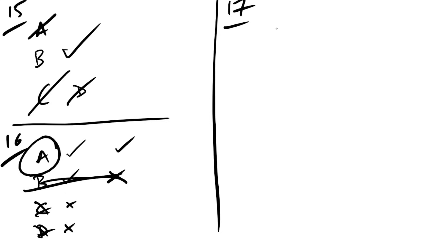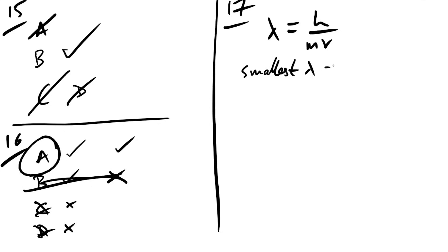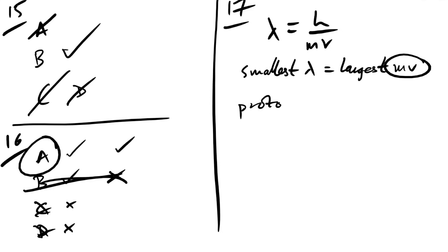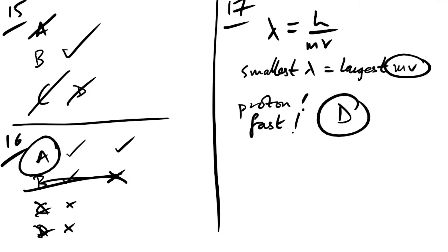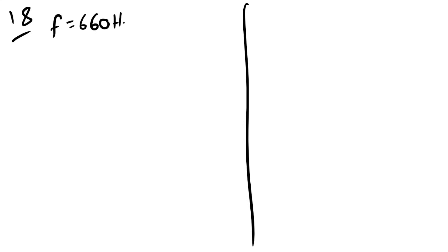Question 17: which particle has the smallest de Broglie wavelength? λ = h/mv, so the smallest λ requires the largest momentum. A proton is much more massive than an electron, and taking the fastest proton gives the greatest mv. The answer is D.